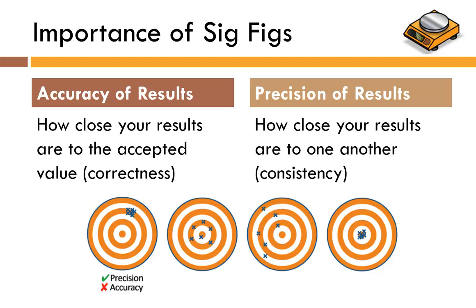On this first dartboard you are precise but not very accurate. This is usually the result of having a consistent technique in the lab but might be an indication that there's a fundamental problem with the procedure. On dartboard 2 you haven't been very precise at all — the data is kind of all over the place but it does generally cluster around the right answer. This can usually be corrected by fixing your lab technique and being a little bit more careful.